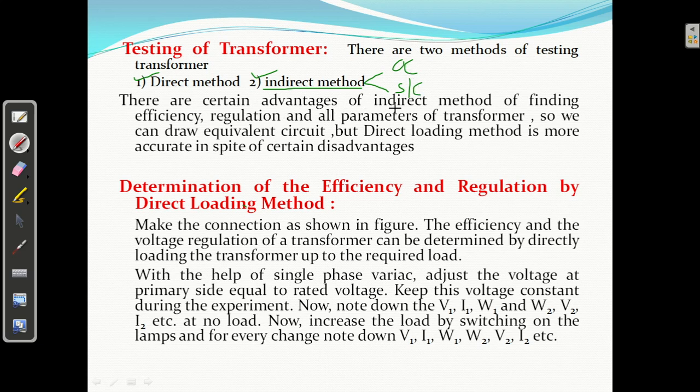We will get the efficiency, we will find the regulation, we will find all parameters of transformer. And based on that, we can draw the equivalent circuit of transformer from this method. But the second method we have is the direct method, direct loading method. It is more accurate, that is the advantageous thing, but there are certain disadvantages.